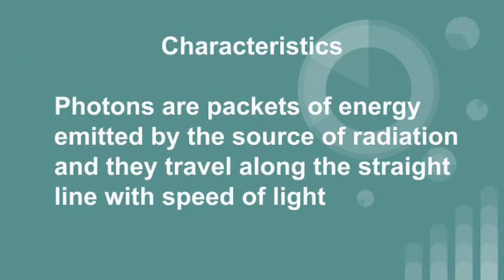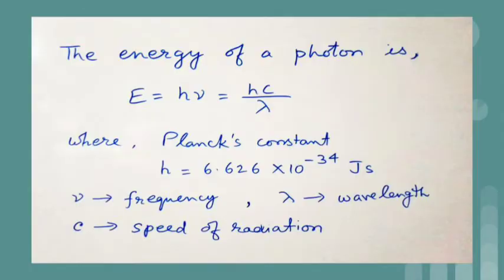According to Planck's quantum theory, a source of radiation emits energy in the form of photons. Photons are packets of energy emitted by the source of radiation and they travel along the straight line with the speed of light. Besides this feature, let us see some more characteristics of photons.